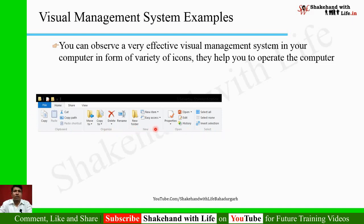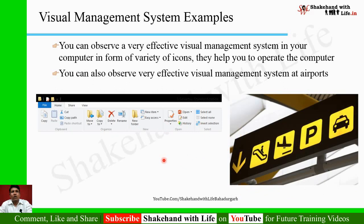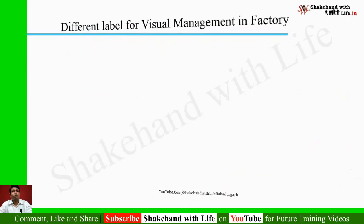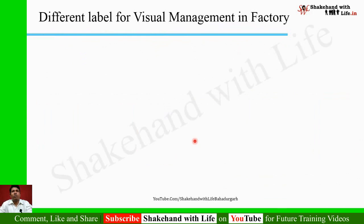So your computer is a very good example to understand the visual management system — with different kinds of icons you can operate your computer easily. Another example: you can observe a very effective visual management system at airports, where different icons and symbols indicate which way to move, how to reach the runway, board a flight, get a taxi, or exit the airport.